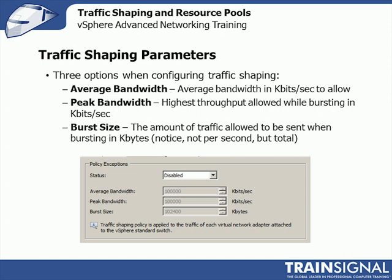Here are the three options when configuring traffic shaping. These are the same settings in the vSwitch. The first is average bandwidth — this is the average bandwidth in kilobits per second that you want this connection to hover around. It'll be a little below, a little above, but it's the average, and it's in kilobits — big K, little b. So it's not in megabytes, megabits, gigabytes, or gigabits. It's kilobits. Make sure you do your conversion.